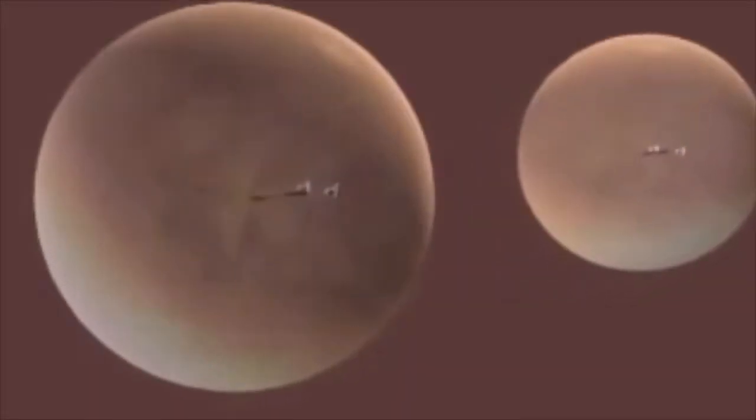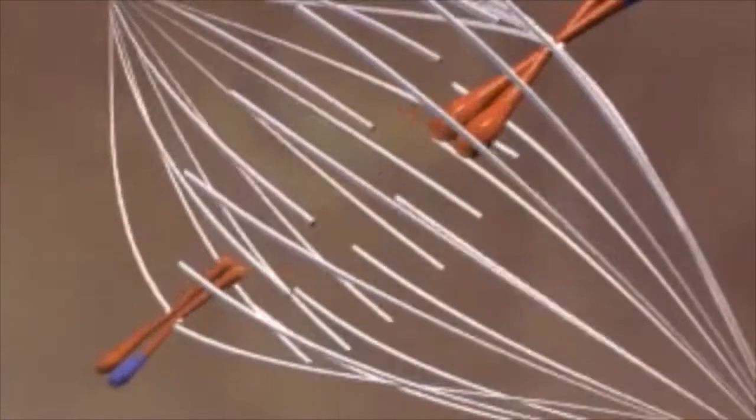Then begins meiosis II, which is very similar to meiosis I. The only difference in meiosis II is that in anaphase, the chromatids separate.